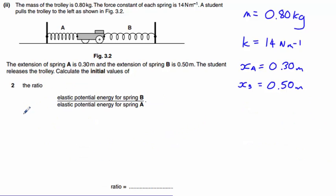Part two of this question asks us to find the ratio elastic potential energy for spring B divided by the elastic potential energy for spring A. Now, elastic potential energy can be calculated with one of two equations, which means E equals half Fx or E equals half Kx squared. So therefore, our ratio is going to be